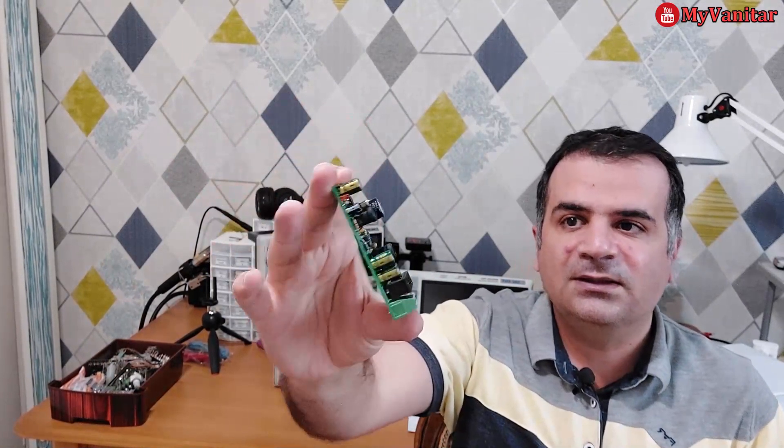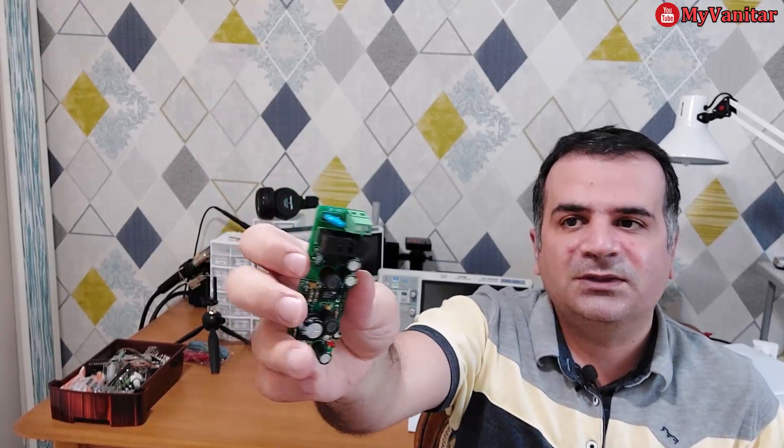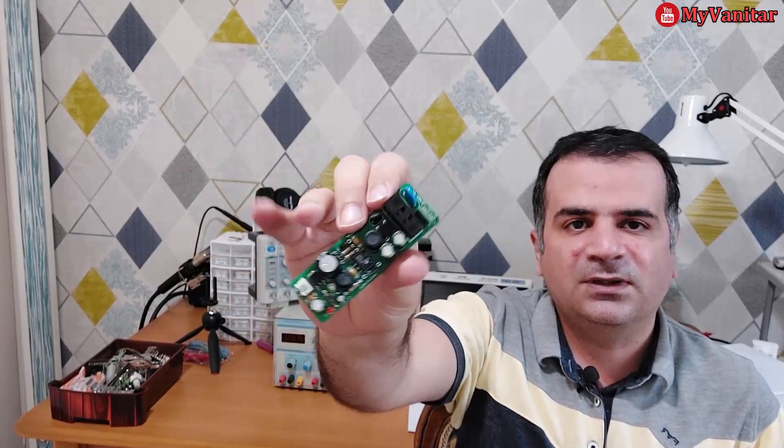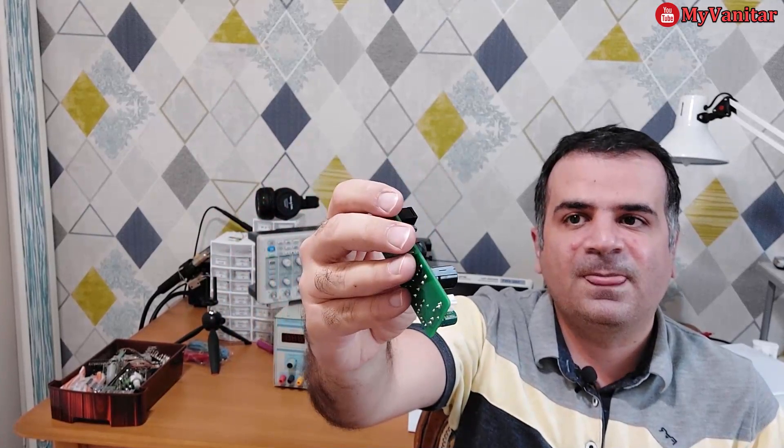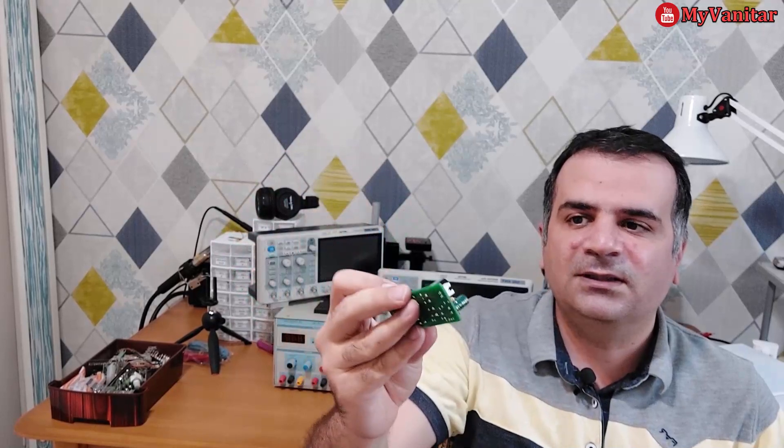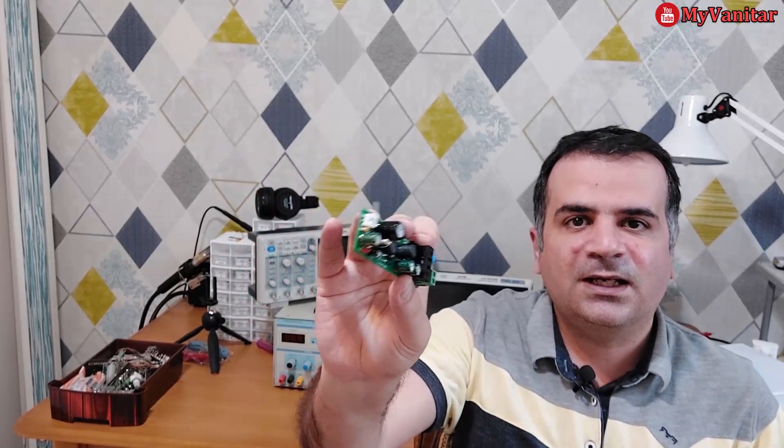And this is the result. It contains all sorts of input protection - MOV, NTC, fuse, and output filter - so it's a complete solution. It converts 220 to 5 volts DC. I will talk about this and we will build one of these together. Stay tuned.